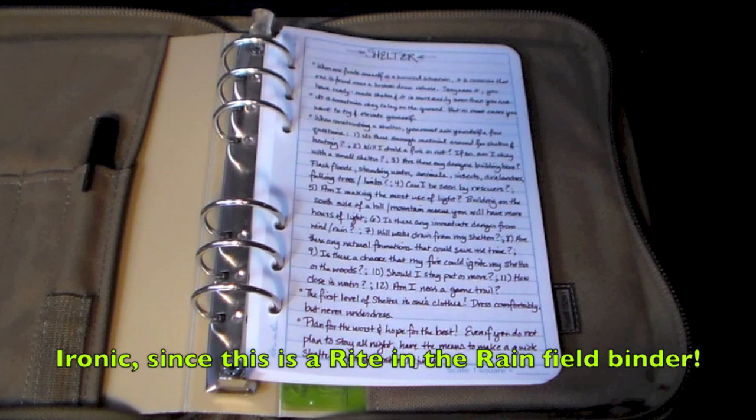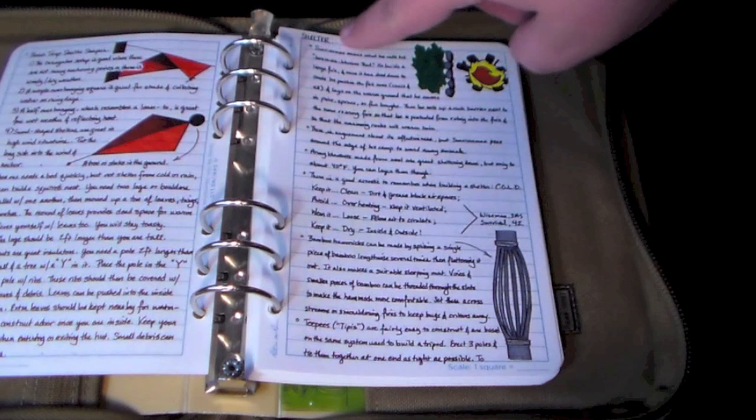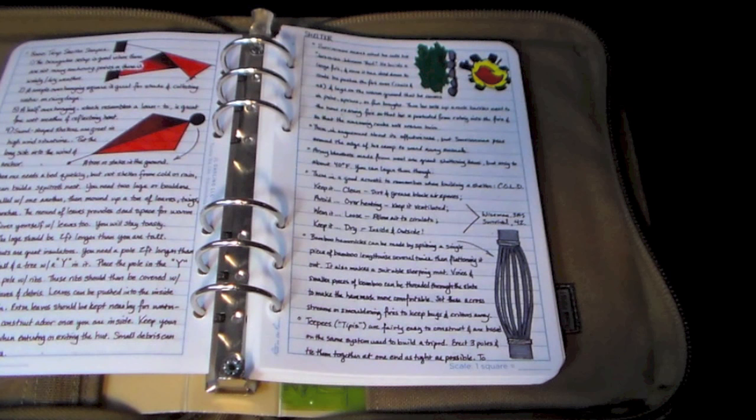So the first page I have here is my shelter section. This begins it. I put shelter up at the top and then each page that has to do with shelter I also put that at the top as well. So that's a really easy way to make sure I know where a section begins and how far a section goes. My shelter section goes on for quite a ways.